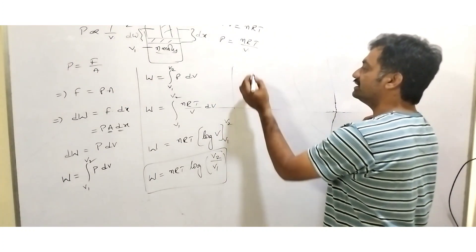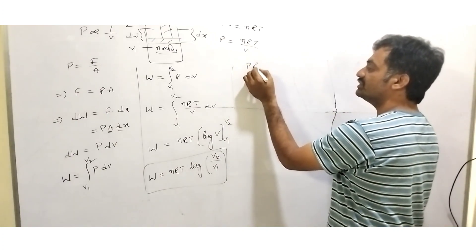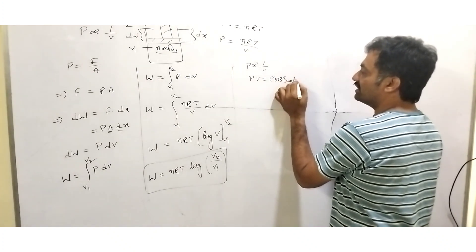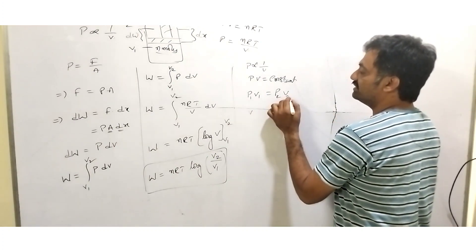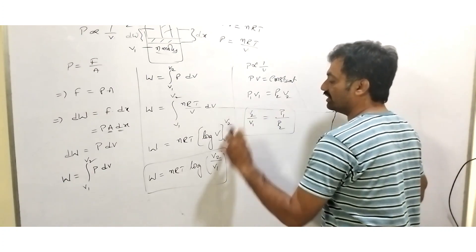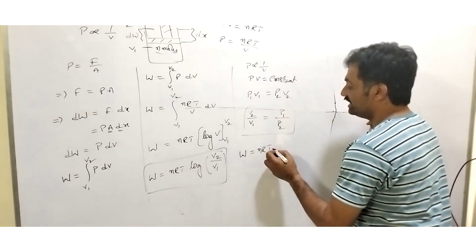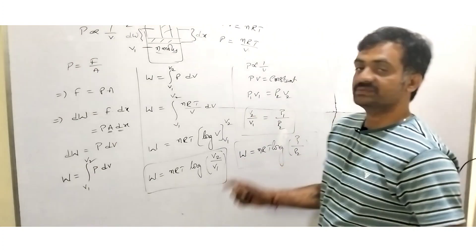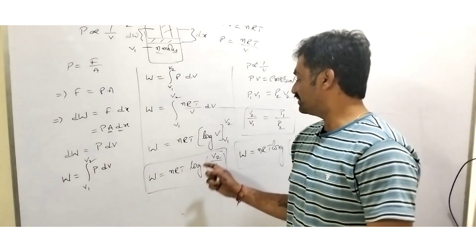When we consider Boyle's law for the isothermal process, pressure is inversely proportional to volume at constant temperature, so PV equals constant, and P1V1 equals P2V2. From this, V2 by V1 equals P1 by P2. When we substitute pressure in place of volume, the work done expression can also be represented as W equals nRT into log(P1/P2). This represents the work done in isothermal process in terms of pressure, while the earlier expression is in terms of volume.